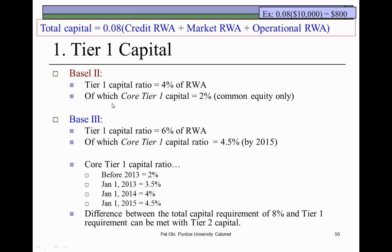In Basel III, the Tier I capital ratio has been raised from 4% to 6% of risk-weighted assets, and of which, the core Tier I capital ratio has been bumped up quite significantly from 2% to 4.5%.